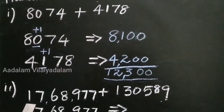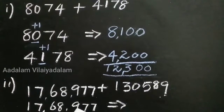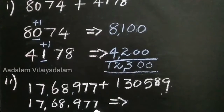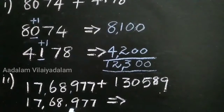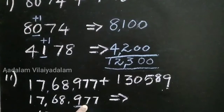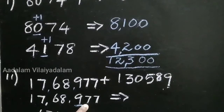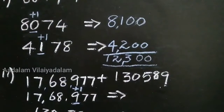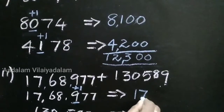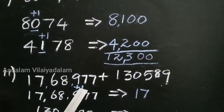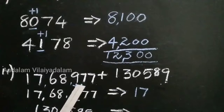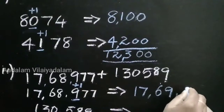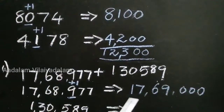Second question: 17,68,977. Round off to the nearest 100. First, identify the 100 place: 1, 10, 100 — this is the 100 place. Consider the second digit, which is 7. Since 7 is greater than 5, add one number to the corresponding digit. 9 plus 1 equals 10, so write 0 and carry 1. That makes it 69. Remaining, we put 0. So 17,68,977 rounded to the nearest 100 is 17,69,000.